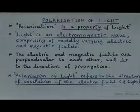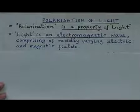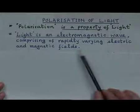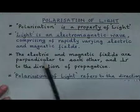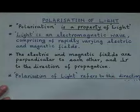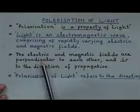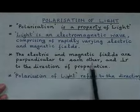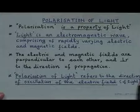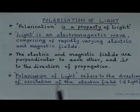Polarization of light is an important property of light. Light is an electromagnetic wave comprising rapidly varying electric and magnetic fields, which are perpendicular to each other and perpendicular to the direction of propagation. Polarization of light refers to the direction of oscillation of the electric field.